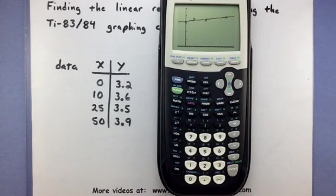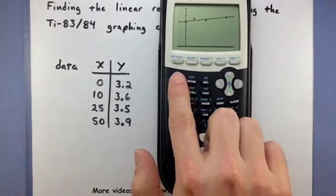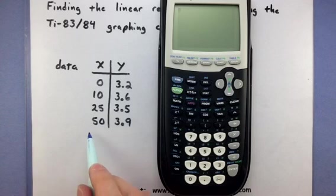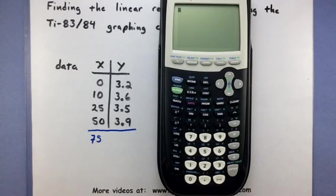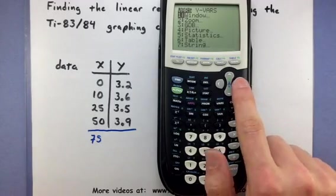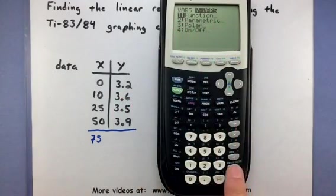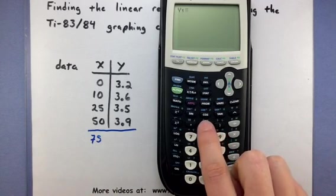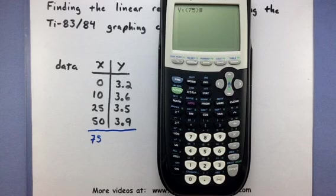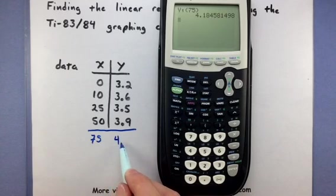One good advantage to having the calculator store this function is that we can make predictions about future values that are not even on our data points. So I'm going to press 2nd and quit and return to my home screen. What if I want to make a prediction as to what my value for X equals 75 will be? As long as I have that linear model stored in there, I can have it make that prediction. I'm going to press my variables, go to Y variables, select function, press ENTER, and ENTER one more time for Y1. Now I'm going to feed it the input of 75 in parentheses. This is telling the calculator to take X equals 75, plug it into our linear regression line, and give us the output. Press ENTER, and according to that linear regression line, it predicts this to be about 1.2.